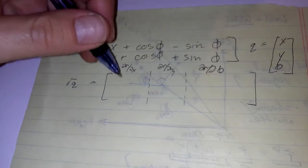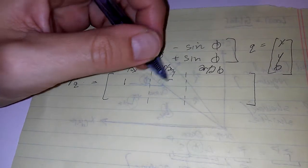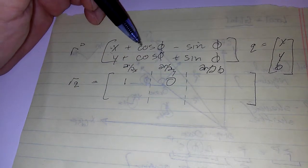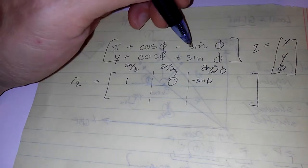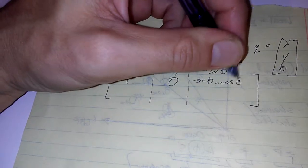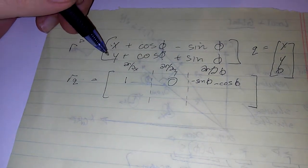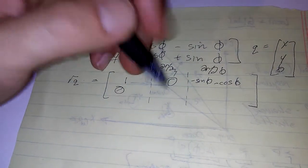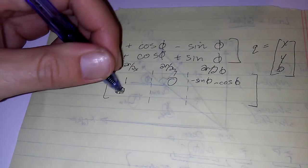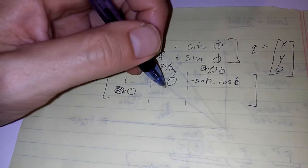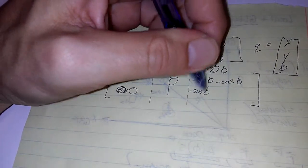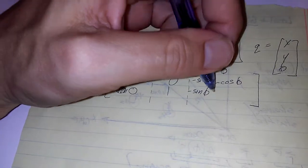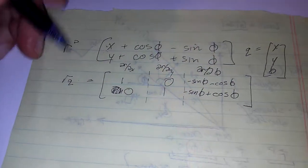So, first row, with respect to x, we have 1. We don't have any y's. That's going to be a 0. With respect to phi, we have negative sine phi, and we have minus cosine phi. Second row, with respect to x, 0. With respect to y, 1. With respect to phi, we have negative sine phi, and plus cosine phi.